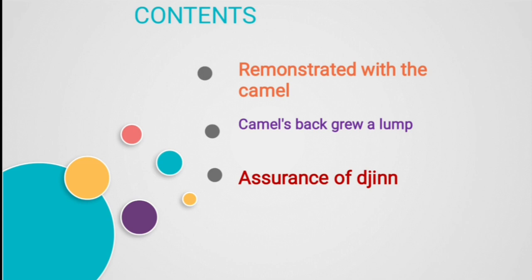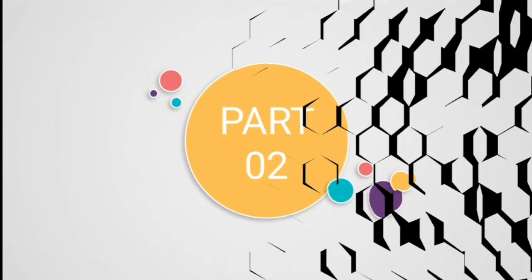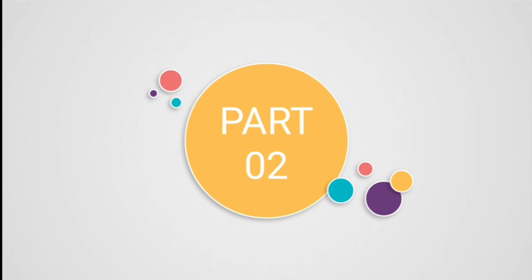In this video, I am going to start the new part of the explanation from this same chapter. The contents are: first, remonstrated with the camel — meaning Jin went to talk with the camel. Next, the camel's back grew a lump. Third, the assurance of Jin — what Jin told to the camel. These topics we are going to explore in the second part.